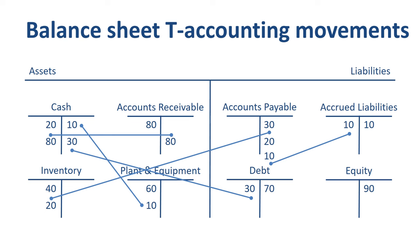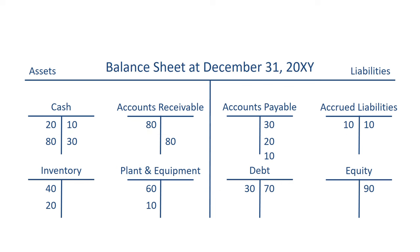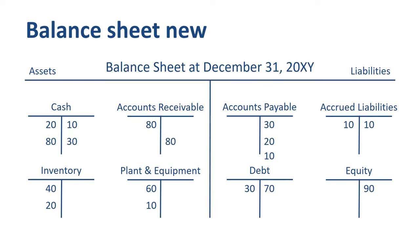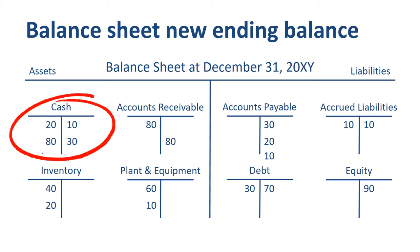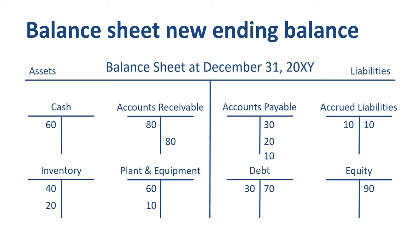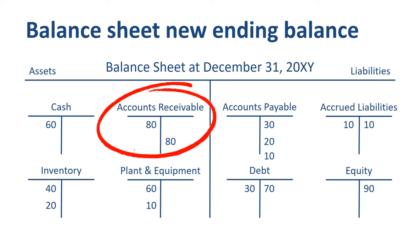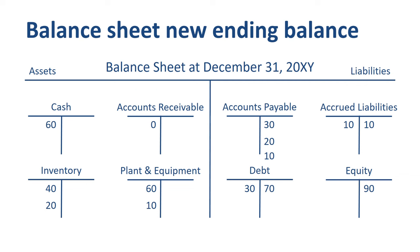The balance sheet has now become overly busy with these transactions, so it is time to clean it up for the new upcoming year-end by calculating the ending balances. In cash, we had an opening balance of 20, a further debit of 80 when the accounts receivable were paid, and outgoing amounts of 10 and 30. If you sum this, you get to a debit ending balance of 60. In accounts receivable, the opening balance of 80 was fully settled, so we have an ending balance of 0. In inventory, we had an opening balance of 40, received a delivery of 20, so we end with 60.